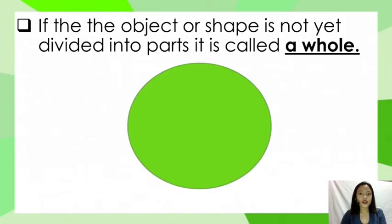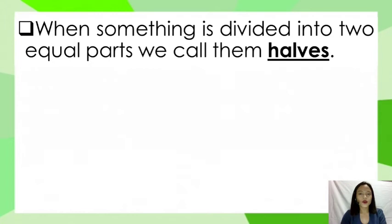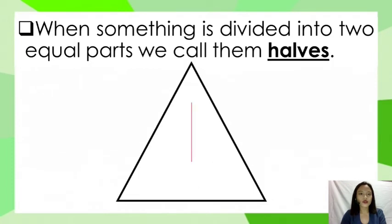If the object or shape is not yet divided into parts, it is called a whole. This is one whole. When something is divided into two equal parts, we call them halves.